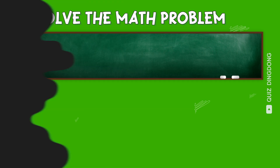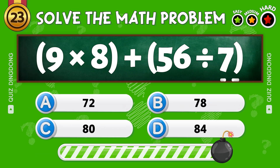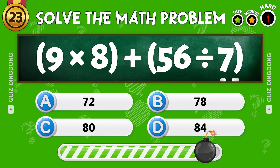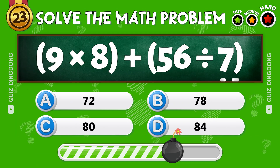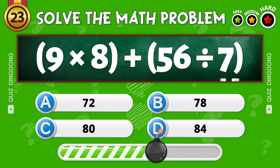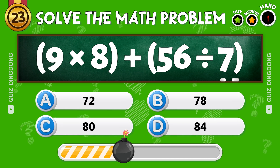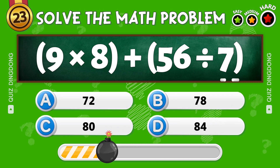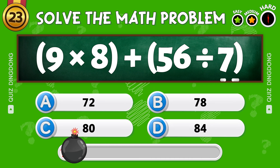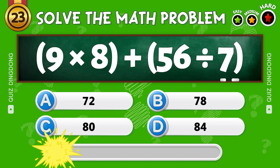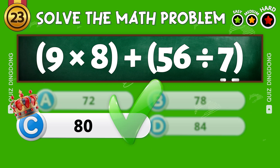Try this one! What's 9 times 8 plus 56 divided by 7? Correct! The answer is 80!